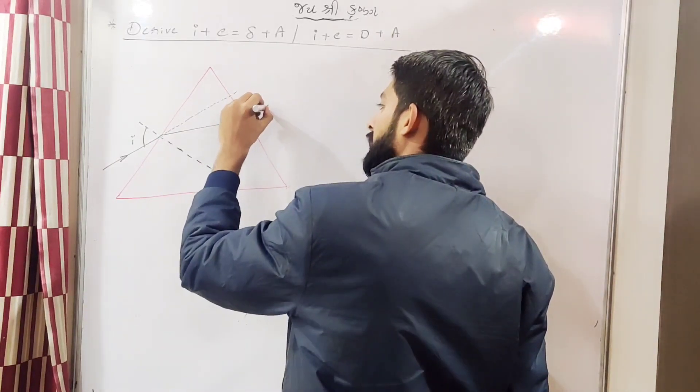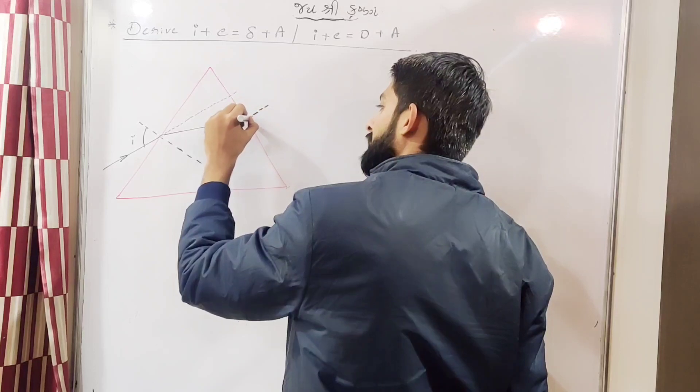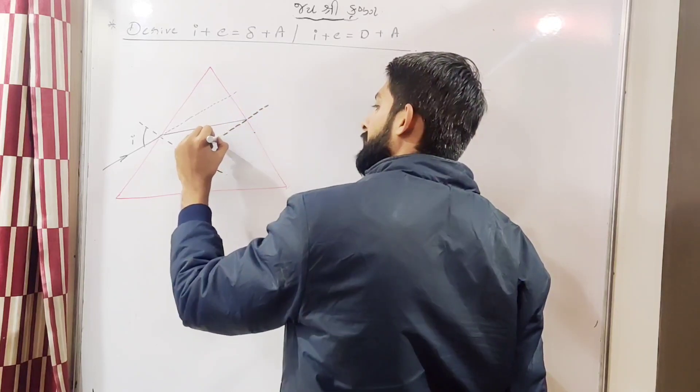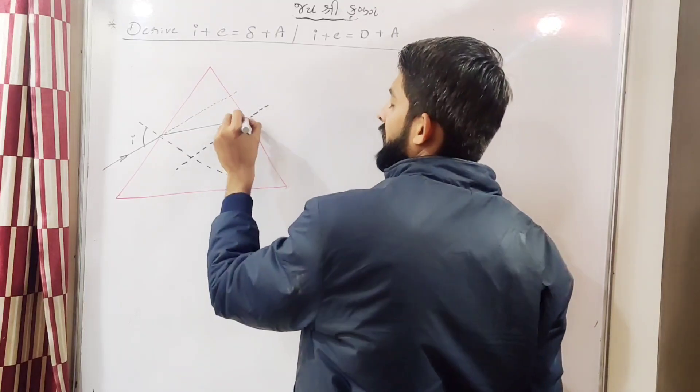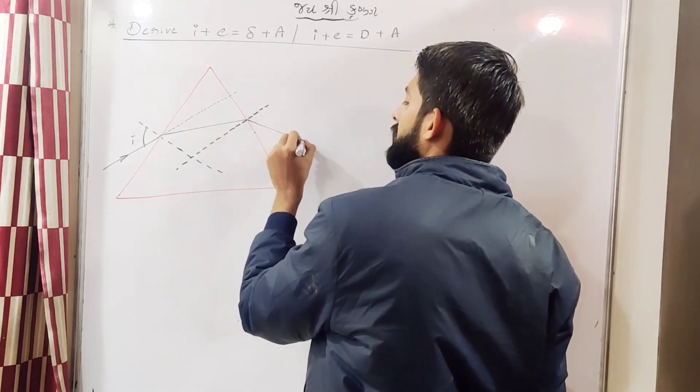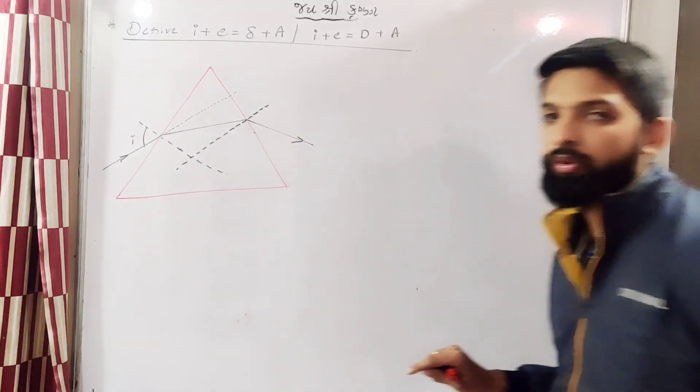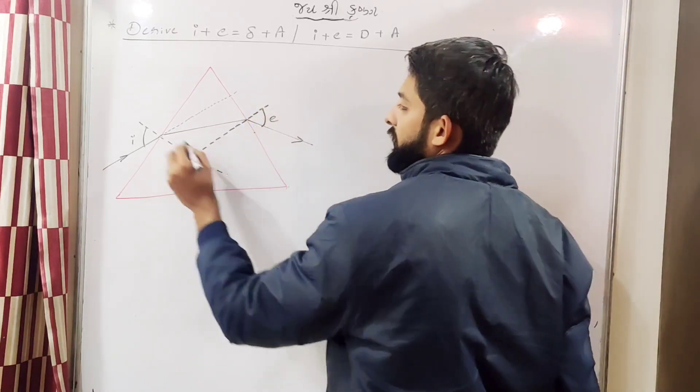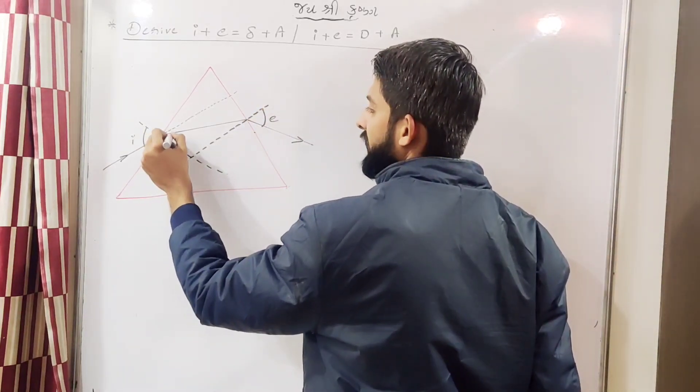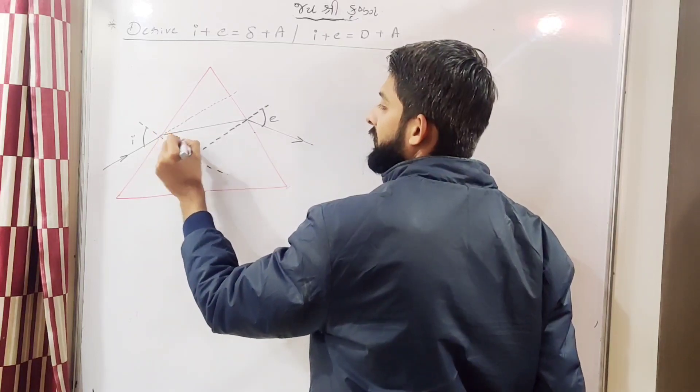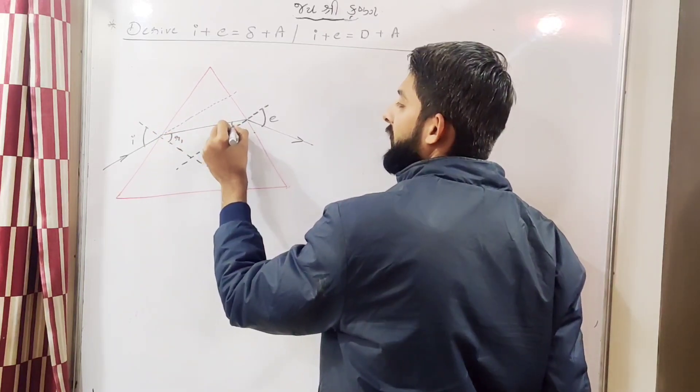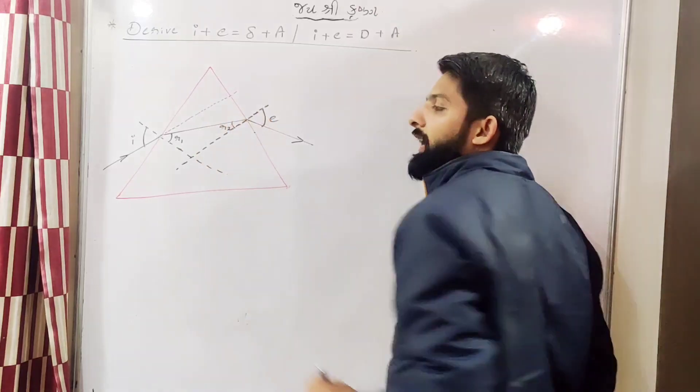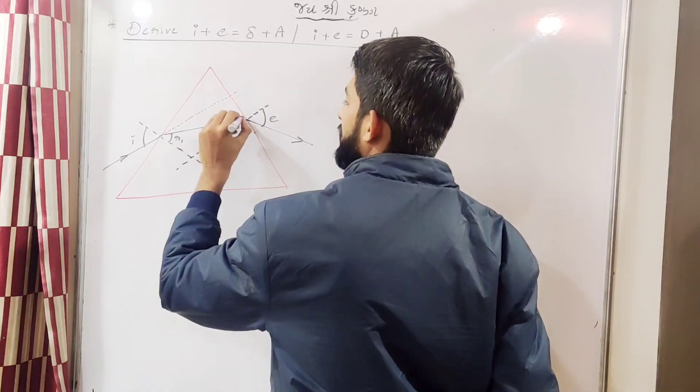So light will bend in this direction, so actually it is going in this direction. Now see, again there will be a normal at this surface like this. And here light will emerge out from the triangular prism, so here will be angle of emergence E.